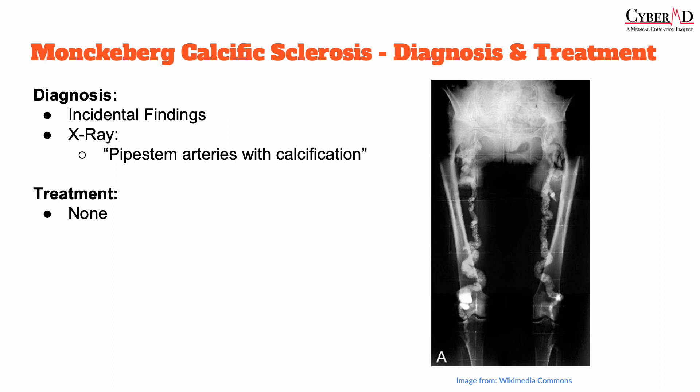It typically affects arteries in the extremities — your arms and legs. On x-rays, Monckberg's calcific sclerosis is visualized as long 'pipe stem' arteries with calcifications. That's going to be the buzzword that probably won't be used if you're ever tested on this.